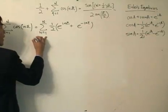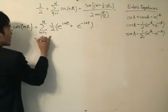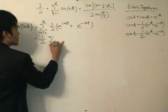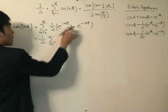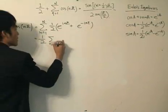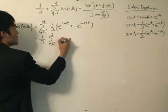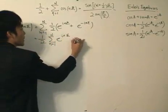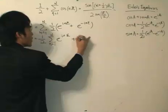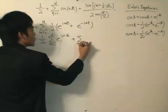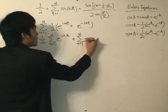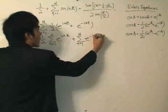After that, I can bring out the half and sum the two terms separately — summation of e^(inε) and summation of e^(-inε) — because you can see something coming up when we do that.